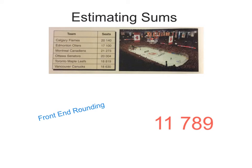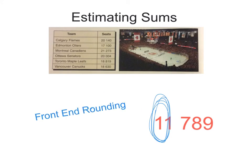When we are estimating a sum, we take a look at the front digit of the number we are working with, in order to figure out if we are going to round up or down. This is known as front-end rounding.